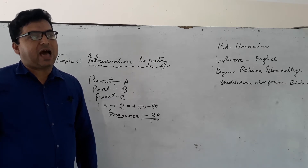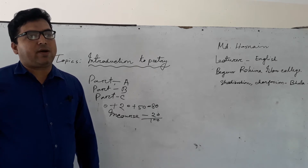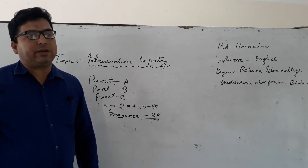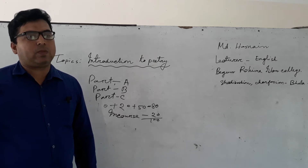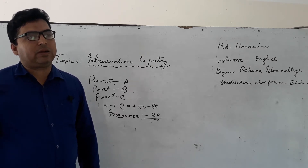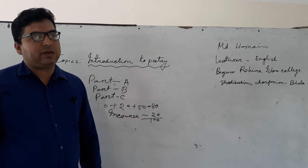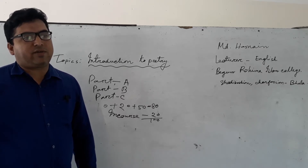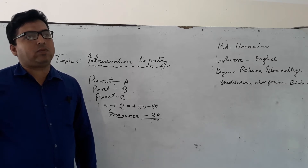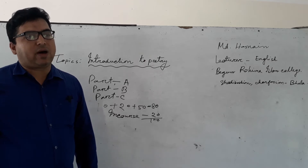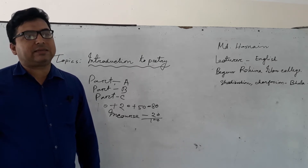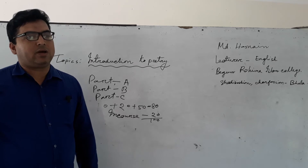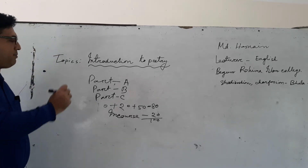Victorian poets: Tennyson, 'Ulysses.' Robert Browning, 'Patriot.' E.B. Browning, 'How Do I Love Thee.' Walt Whitman, 'Crossing Brooklyn Ferry.' Emily Dickinson, 'Because I Could Not Stop for Death.' William Butler Yeats, 'A Prayer for My Daughter.' Robert Frost, 'Mending Wall.' D.H. Lawrence, 'Piano.' Dylan Thomas. Ted Hughes. Rabindranath Tagore, 'Where the Mind is Without Fear.' A total of 20 poems in these topics for first year under National University. Here also added literary terms.